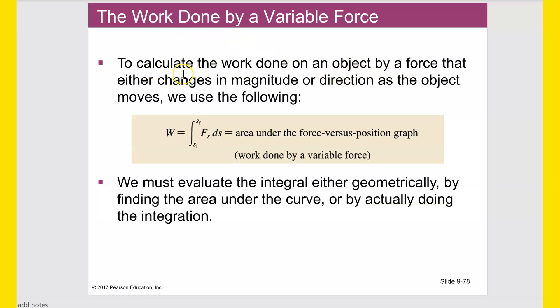The work done by variable force. To calculate the work done on an object by a force that either changes in magnitude or direction as the object moves we got to use this following formula. It's no longer just work equals force times distance. You calculus too students will appreciate this. If the force is a variable force and in this case the variation would have to happen as a function of the displacement. So a spring would be a perfect example of that. The spring does more force the more it's displaced from its equilibrium position. But you do the integral. The integral takes care of that stuff for you. So force times distance in this case is the same thing as force integrated over distance with respect to distance if you want to say it that way. We must evaluate the integral either geometrically that means finding the area right or by doing the integration with algebra.